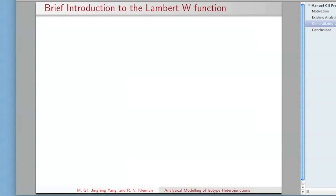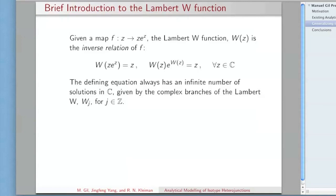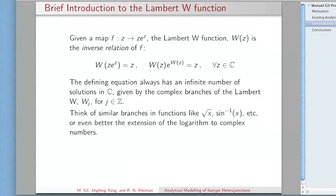To do that, I need to talk to you a little bit about the Lambert-W function, because ultimately this is going to be the crucial tool to perform the generalization. Suppose you're given a map F which is going to map a number Z to Z times e to the Z. We define the Lambert-W function as the inverse relation of that map, which means that these three relationships have to be satisfied for all complex numbers. As you define it in this equation, you're going to see that there's going to be infinitely many solutions. The way we deal with this is that we talk about the branches of this Lambert-W function. The idea of the branches is nothing really that exotic. You have it in functions like the square root, plus or minus inverse sine, or the extension of the logarithmic to the complex plane. Now we're just inverting a different type of equation.